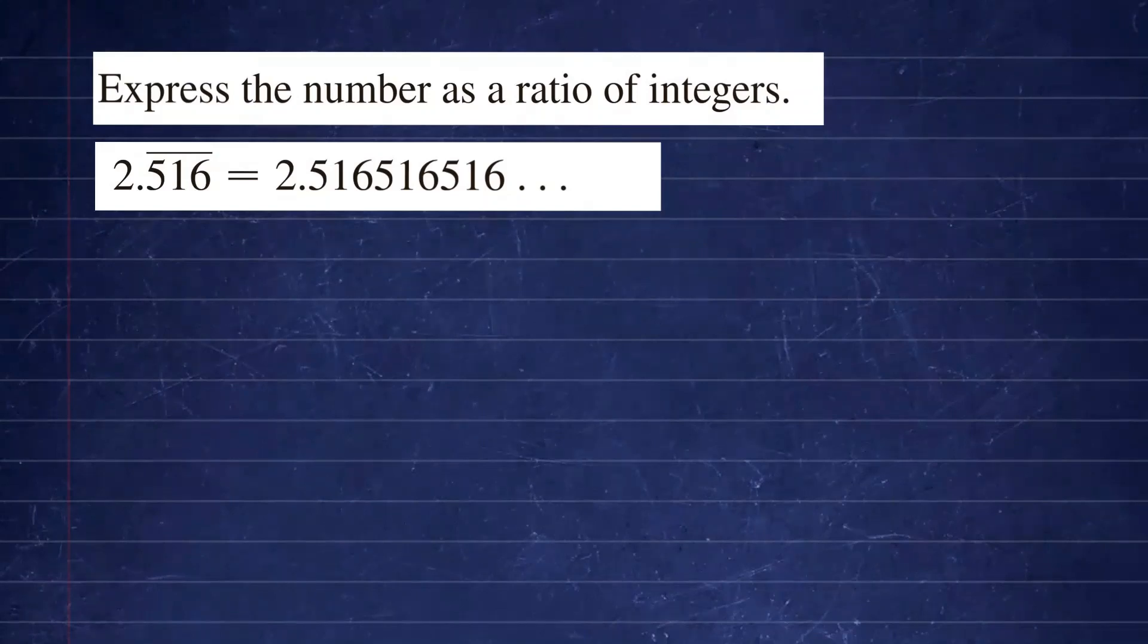Our goal is to express that repeated portion as a geometric series. You can write this number as 2 plus the repeated portion. So this is 5, 1, 6, three decimal places. You can write that as 516 over 1,000, just like that. In other words, I'm going to write it using exponents as 10 to the 3rd power.